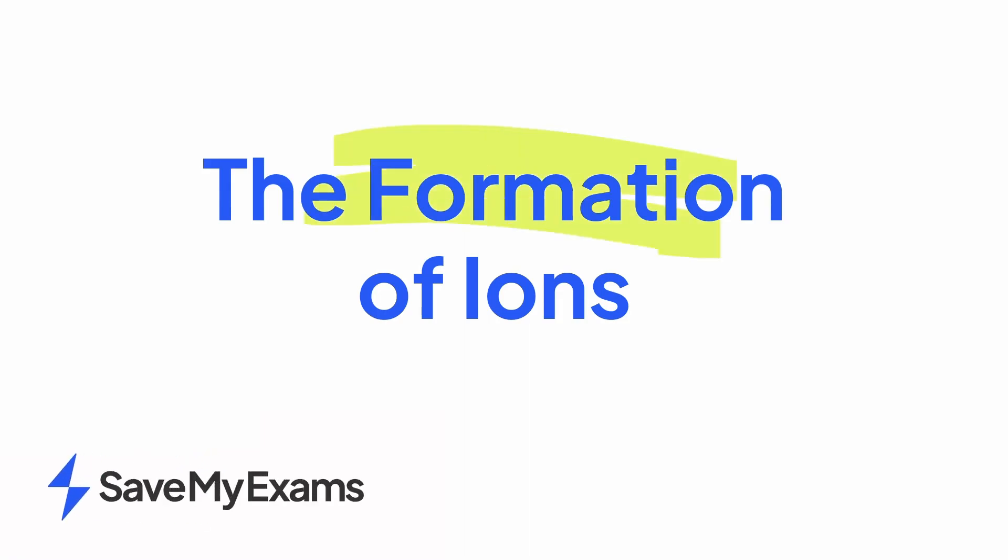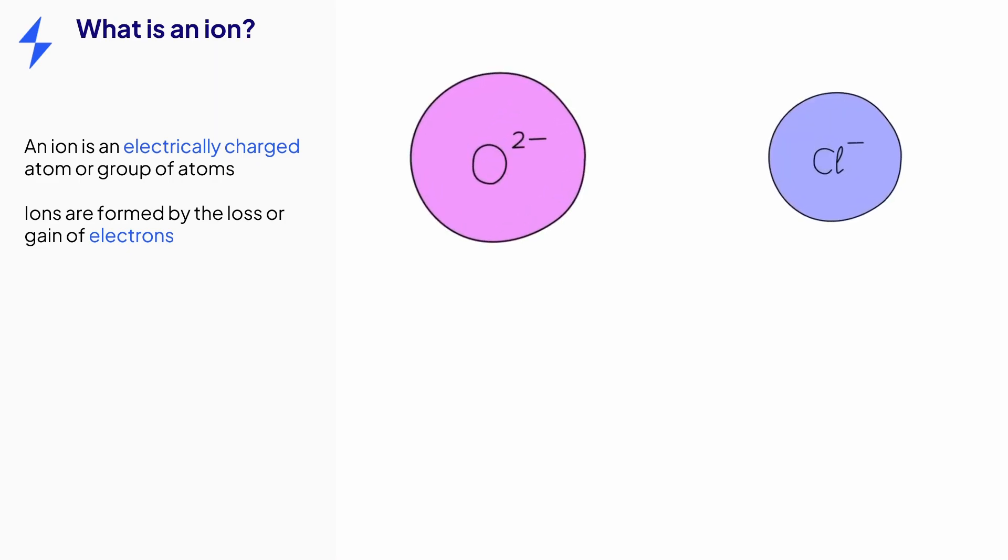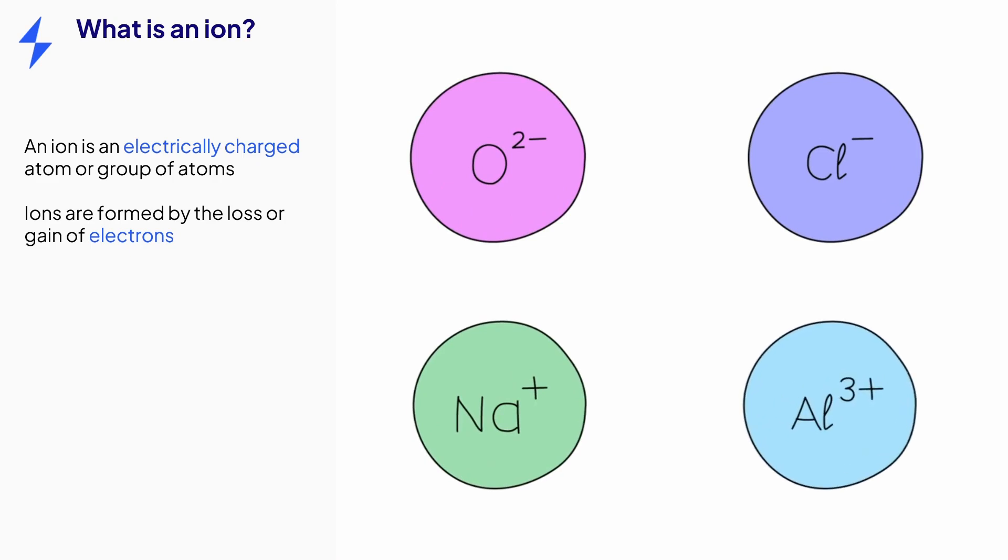This video is on the topic of the formation of ions. Let's start by explaining what we mean by the term ion. An ion is an electrically charged atom or group of atoms. Ions are formed when an atom or group of atoms loses or gains electrons. Ions can be negatively charged or positively charged and the sizes of these charges can differ. You can see this by the different ions shown here.